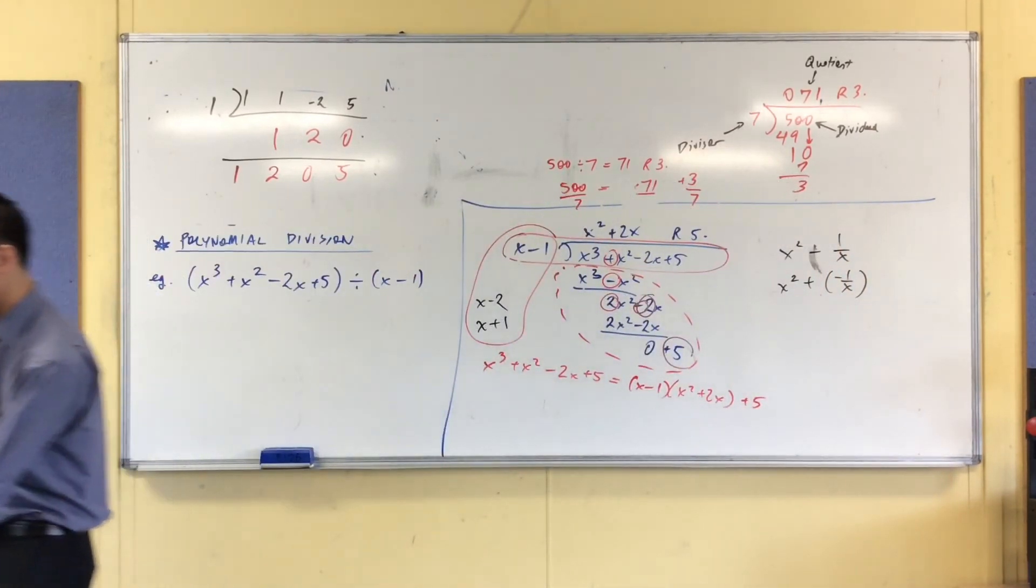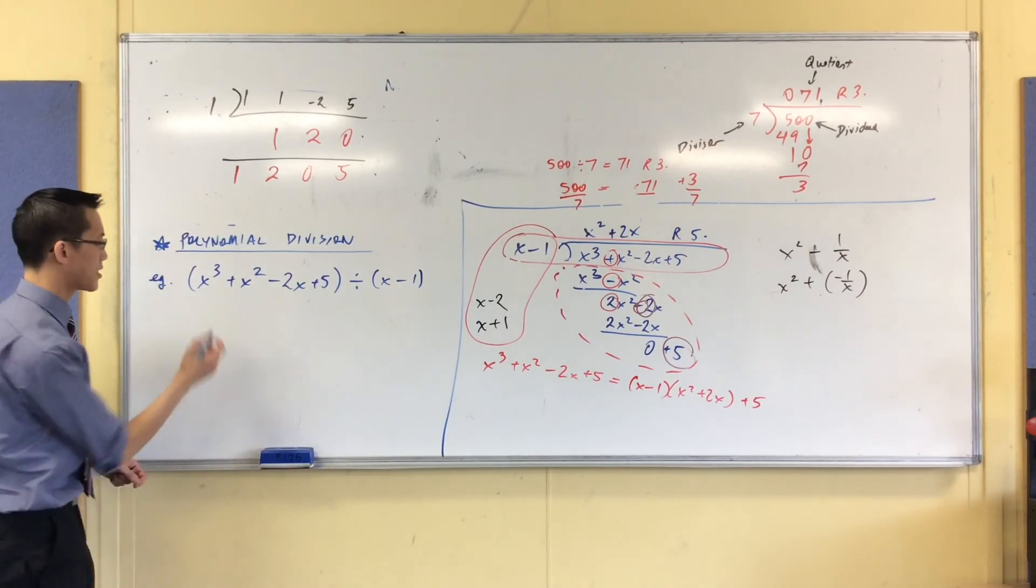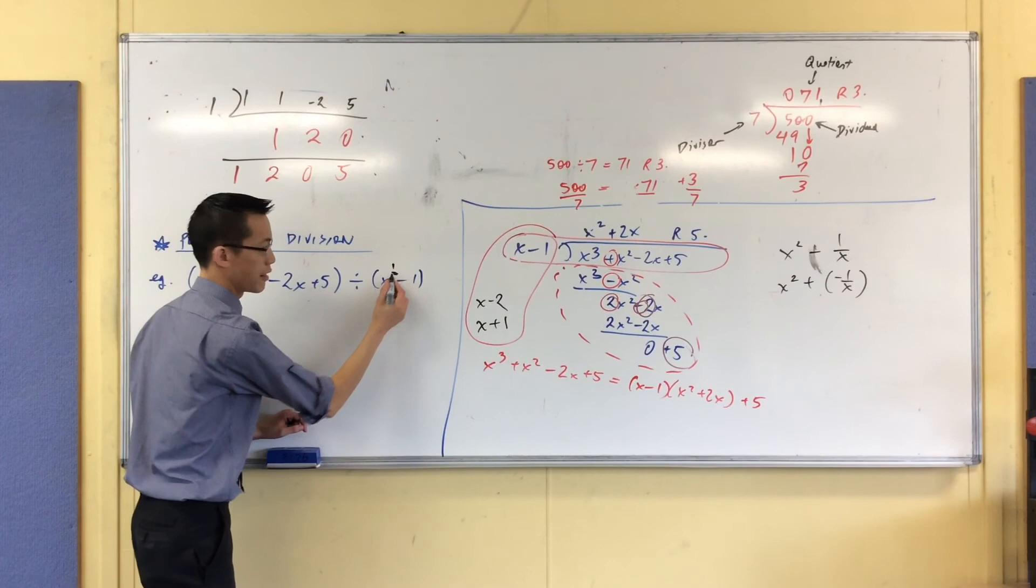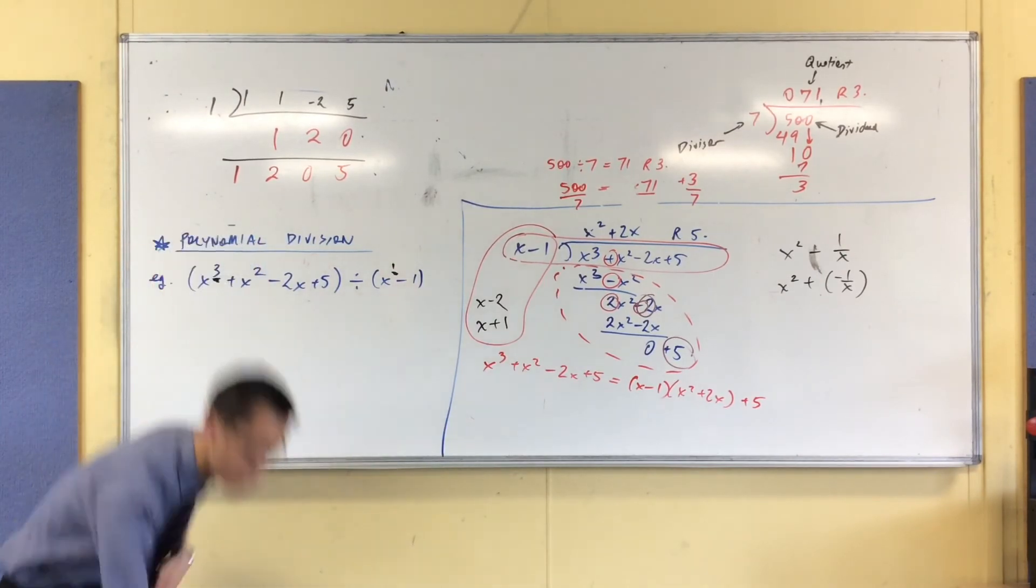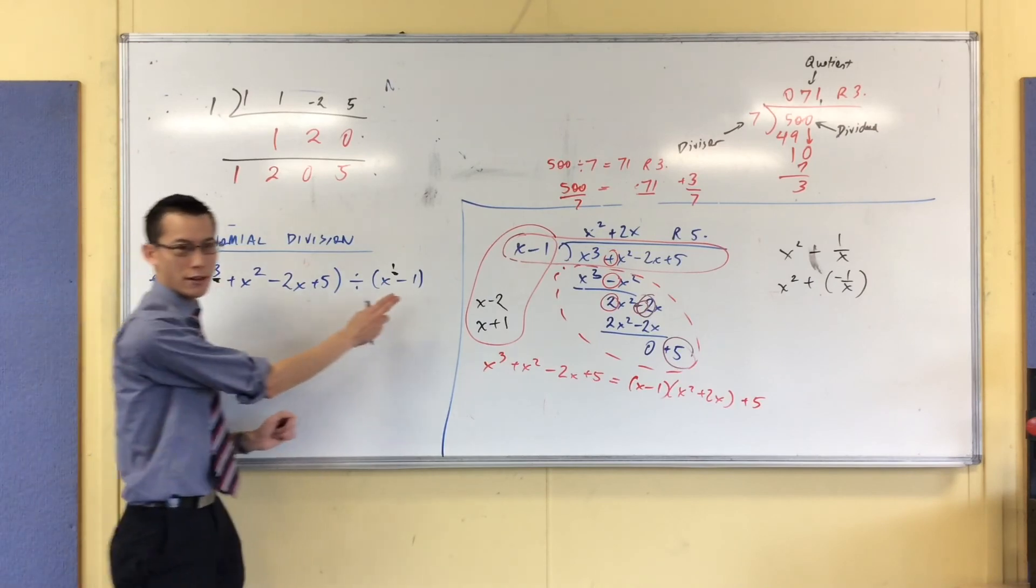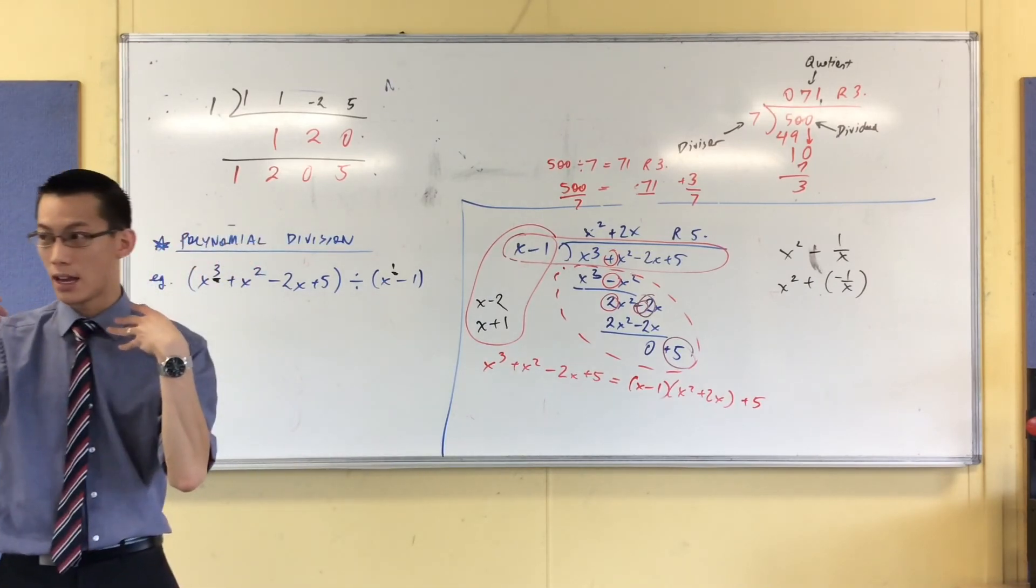Now, have a look at what we started with. I started with degree 3 and I divided by degree 1, right? So when you deal with index laws, you know, when you do degree 3 divided by degree 1, you should end up with degree 2. You should end up with a quadratic of some kind.